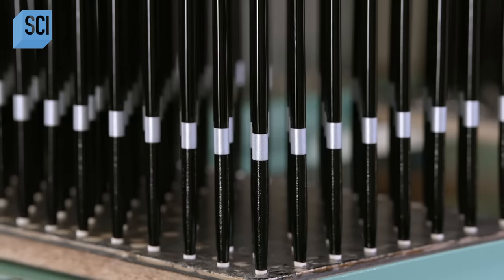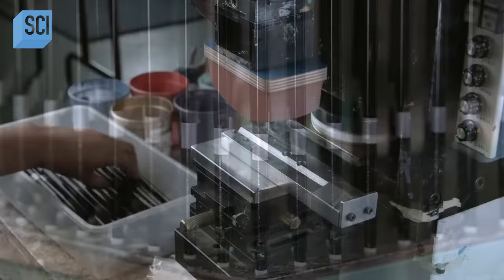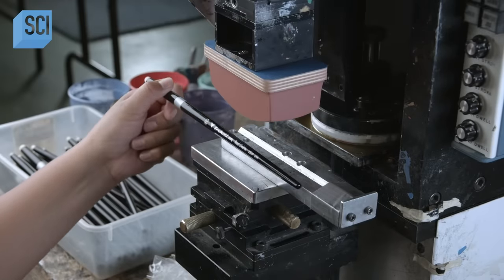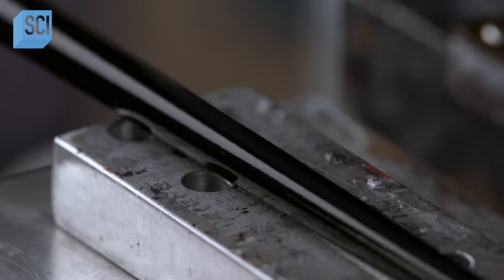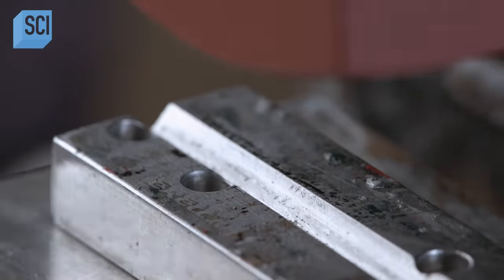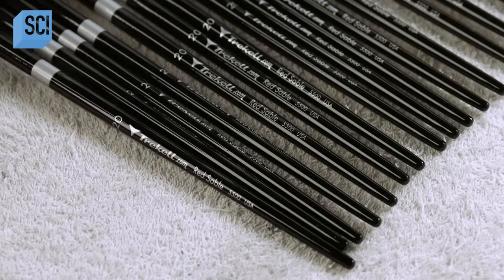Once the last coat of black paint dries, a worker uses a pad printer to stamp lettering on the handle with quick-dry silver ink. One stamp simultaneously applies the manufacturer's name, the brush hair material, the size of the brush, and the series number.